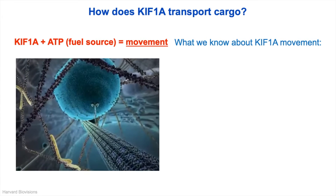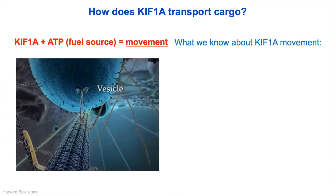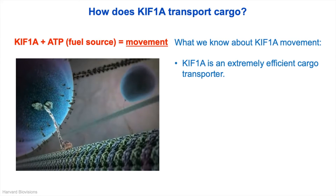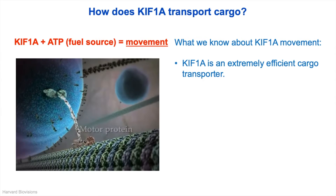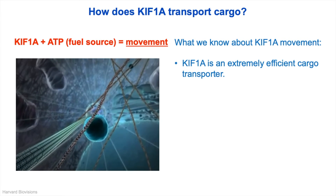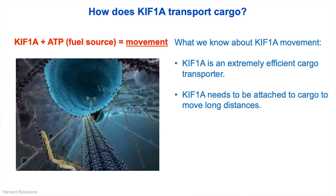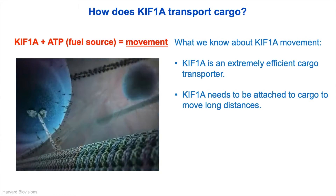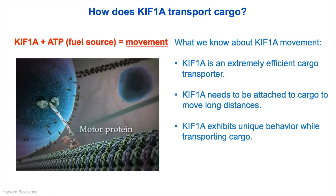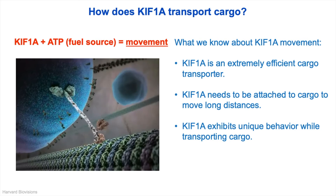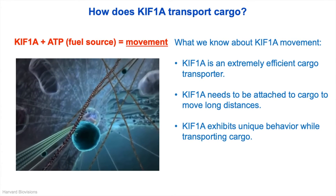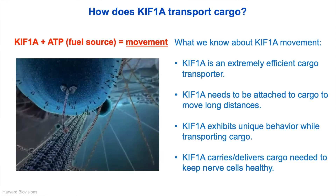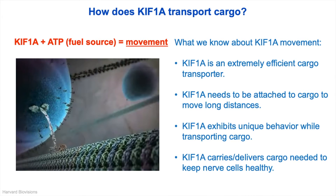So far, the scientific community has uncovered quite a few facts about KIF-1A movement. One, KIF-1A is an extremely efficient cargo transporter compared to other KIFs. KIF-1A has actually been called the molecular marathon runner because it transports cargo over very long distances within the cell. Two, KIF-1A needs to be attached to cargo to move long distances — in other words, it can't be driving around with an empty truck bed; it needs to be loaded up with cargo before long distance transport can occur. Three, KIF-1A exhibits unique behavior while transporting cargo — it walks in a very specific way in comparison to other KIFs. And lastly, four, the cargo that KIF-1A carries needs to be delivered in the right place at the right time to keep our nerve cells healthy.